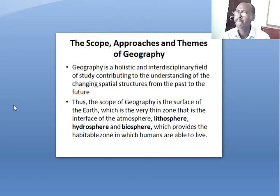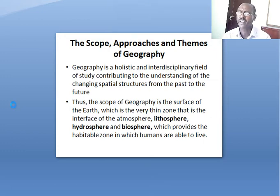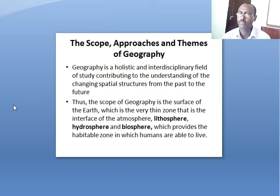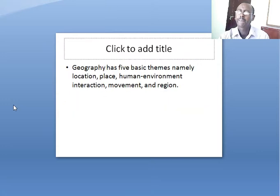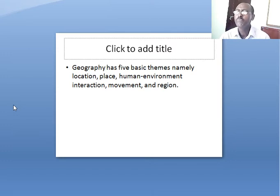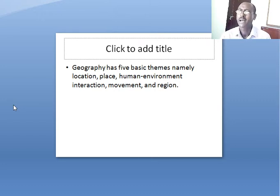The scope of geography is the surface of the earth, which is a very thin zone — the interface of the atmosphere, the lithosphere, the hydrosphere, and the biosphere. The lithosphere refers to the outer part of the earth, or what we call the crust, the hard cover of the earth. The hydrosphere refers to water bodies, and the biosphere is the habitable zone in which humans are able to live. Geography has five basic themes: location, place, human-environment interaction, movement, and region.